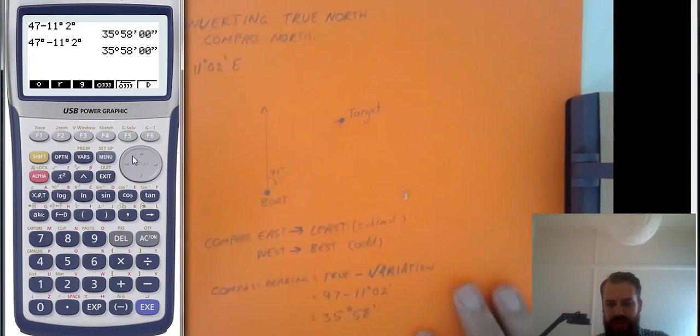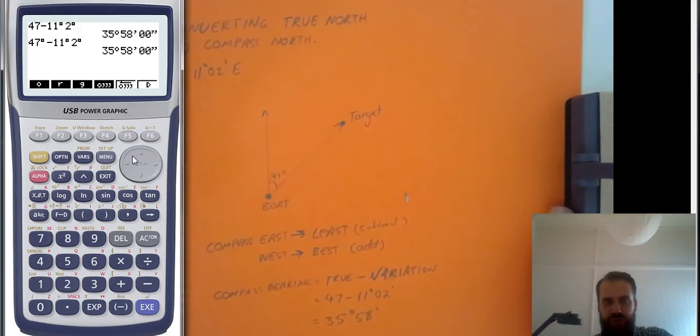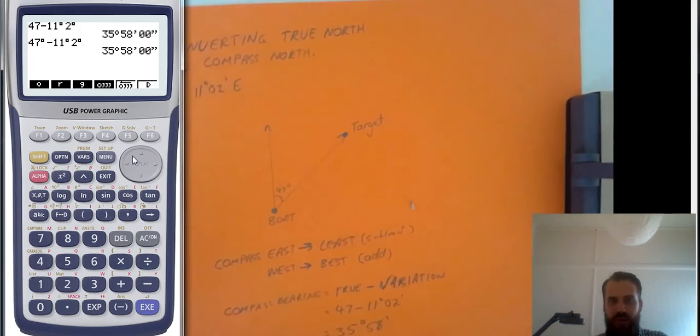That's it. That's converting True North to Compass North. Now if you want to convert the other way, these two rules, east least, west best, they just get reversed. So it gets a little bit confusing there, but this is the main way that you're going to have to convert here. You're going to convert True North to Compass North most likely, because you're going to look at a map and then you're going to have to navigate using that map. So this is the most likely scenario when it comes to converting between True North and Compass North. Thanks guys.